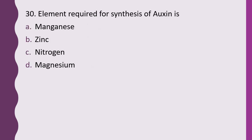Question 30. Element required for synthesis of auxin is: manganese, zinc, nitrogen, or magnesium. The correct answer is option B, zinc.